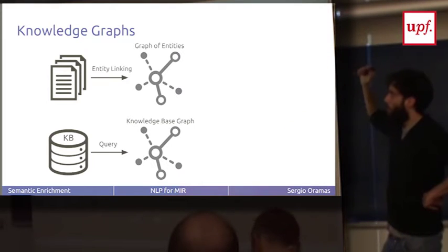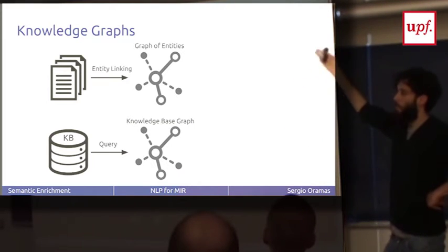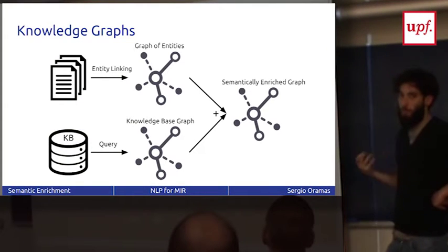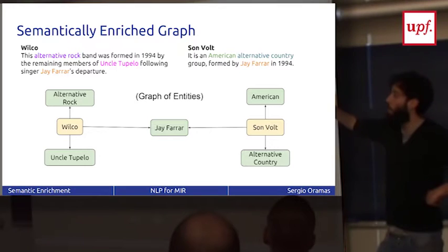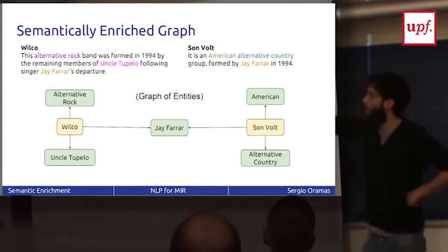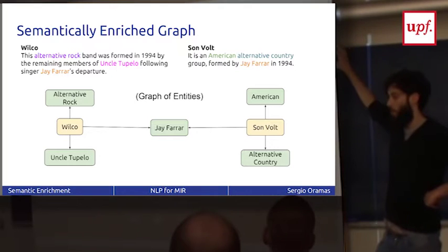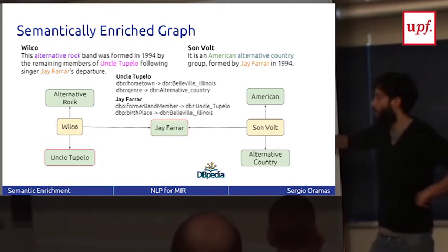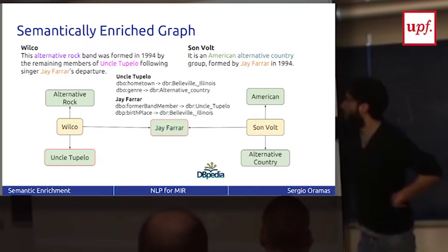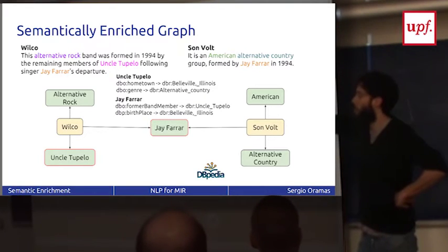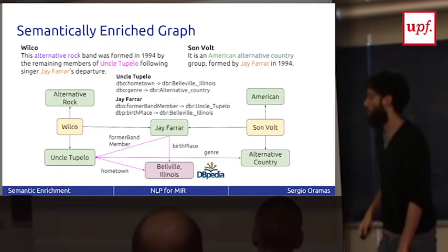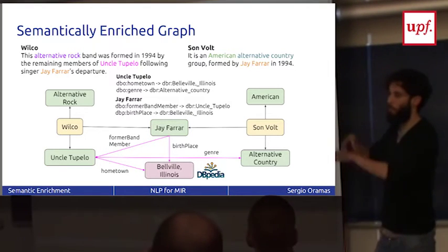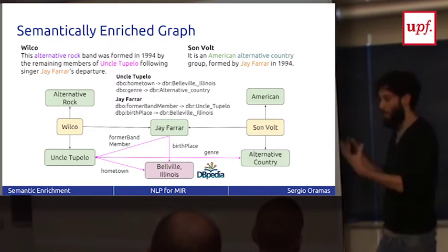So we have these two approaches, and we also can combine a graph of entities with information from the knowledge base, what we call a semantically enriched graph. So this is the graph of entities, but as we have used entity linking, we have identified all these entities in a reference knowledge base. So we can get some information from this reference knowledge base to enrich the graph. For example, entities that were detected in these documents and they are in Wikipedia, we have information from the Wikipedia of these entities. So we can expand this graph, adding more labels and more nodes with the information from the Wikipedia. So in this way we can enrich the semantic graph and build this semantic representation of a document. So this is what we are going to use for MIR.